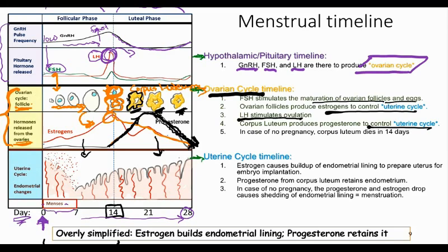This means that if you know when ovulation occurred, you can very quickly figure out when the corpus luteum is going to die. But women don't usually know when ovulation occurred. Women who are trying to get pregnant or use a rhythm method are only going to know the day of their last period, and calculating 14 days in from that doesn't necessarily tell them when ovulation will occur because that half of the cycle varies.